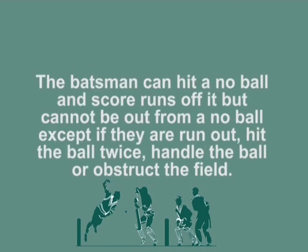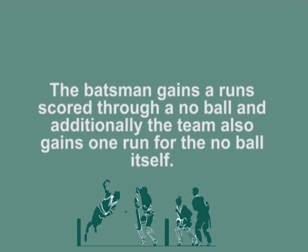The batsman can hit a no ball and score runs off it, but cannot be out from a no ball except if they are run out, hit the ball twice, handle the ball, or obstruct the field. The batsman gains the runs scored through a no ball, and additionally the team also gains one run for the no ball itself.